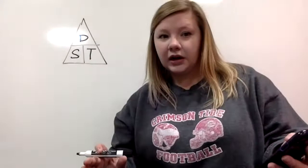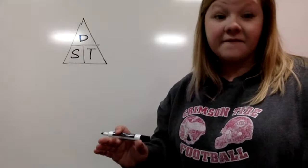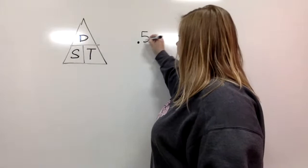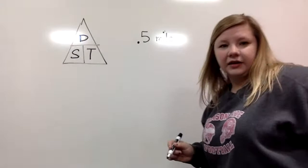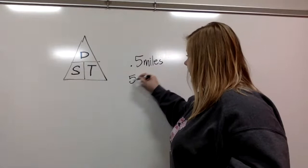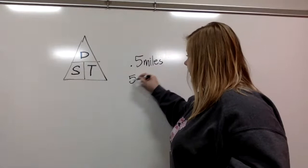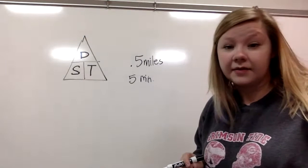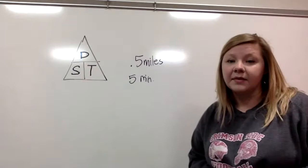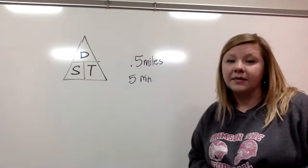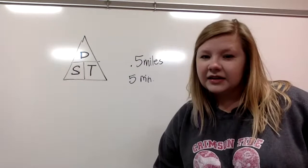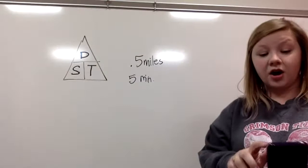Morgan walked a half mile in five minutes. I'm going to write 0.5 miles in five minutes. Now I'm trying to trick you here, so don't let me trick you. Remember my triangle — if I hide the S, it's distance divided by time. So take the distance divided by the time. If you know it, keep it to yourself and we'll post it in a little bit. That's awesome.